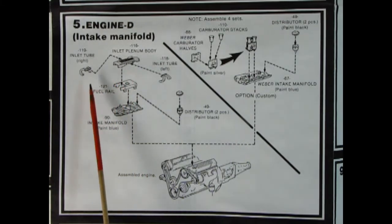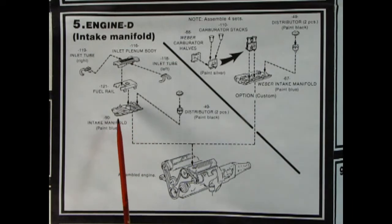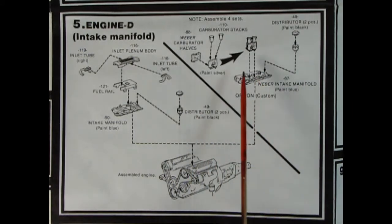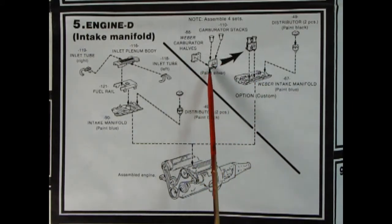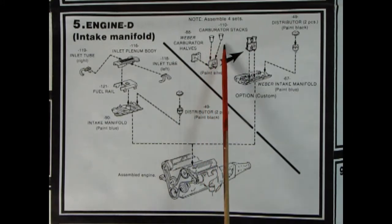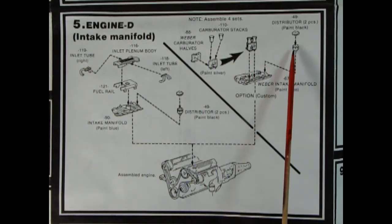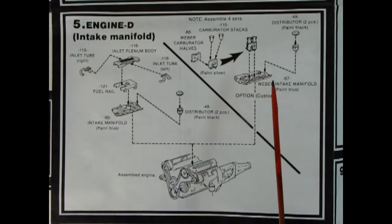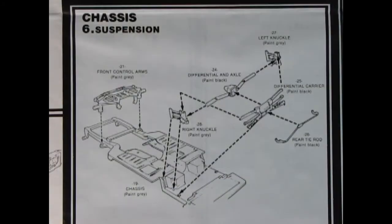Panel five shows our intake manifold. There's our inlet plenum body and the inlet tubes right and left with the fuel rail underneath and our intake manifold, which you're supposed to paint blue. We've got our distributor, and if you want the Weber carb version then you've got the two sides glued together with the little stack on top. Either of your choice will drop onto the top of the engine block.